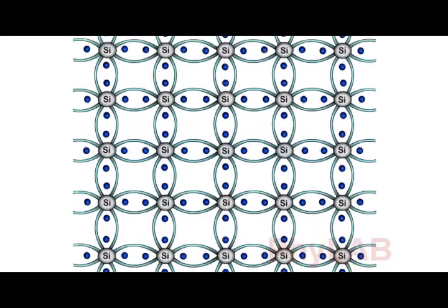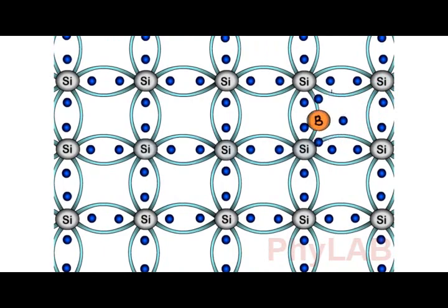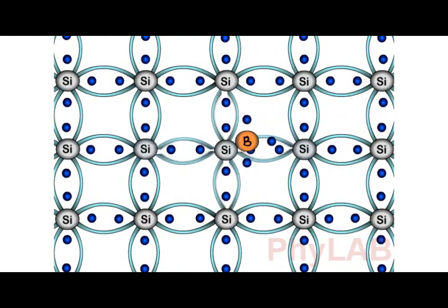The process of adding these impurities to the intrinsic semiconductors is called doping. And the impurities that improve the conductivity of these semiconductors are called dopants.